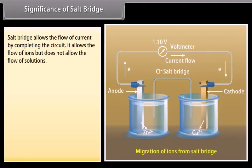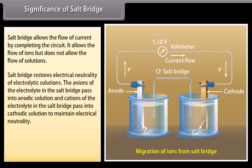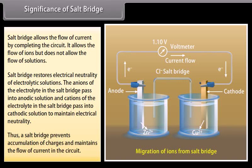Significance of salt bridge: The salt bridge allows the flow of current by completing the circuit. It allows the flow of ions but does not allow the flow of solutions. The salt bridge restores electrical neutrality of electrolytic solutions — the anions of the electrolyte in the salt bridge pass into the anodic solution, and cations pass into the cathodic solution to maintain electrical neutrality. Thus a salt bridge prevents accumulation of charges and maintains the flow of current in the circuit.